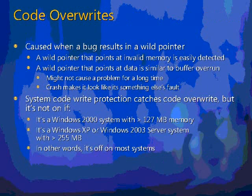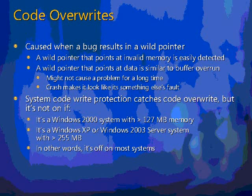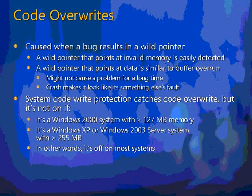The next type of unanalyzable crash we'll look at is code overwrite. A code overwrite is caused when a driver has a wild pointer because of a bug, and it overwrites not somebody else's data, but somebody else's code. Another driver whose code was overwritten, or the kernel, trips on it and causes an illegal operation, and the system points the finger at it. There's a feature of Windows called System Code Write Protection aimed at detecting that kind of bug right when it happens.